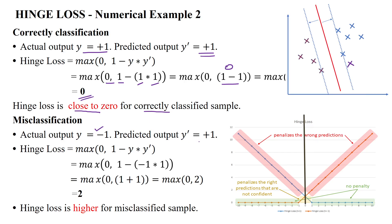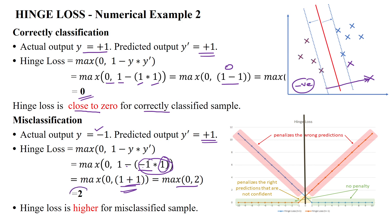Another example: actual output is minus 1 but predicted output is positive 1, so it is misclassified. The actual value is on the negative side but predicted as positive. Substituting: 1 minus (minus 1 times 1) = 1 minus (minus 1) = 1 plus 1 = 2. So maximum of 0 and 2 is 2, which is a quite high loss value for this misclassified sample.